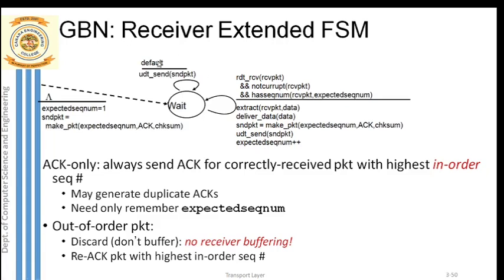There is also a default case at the receiver. If the packet is not received in order, or if the received packet is corrupted, the receiver performs one operation: retransmit the last correctly sent acknowledgement packet. This retransmission of the previous acknowledgement occurs only when the receiver is not receiving data in order or if the received data is corrupted.